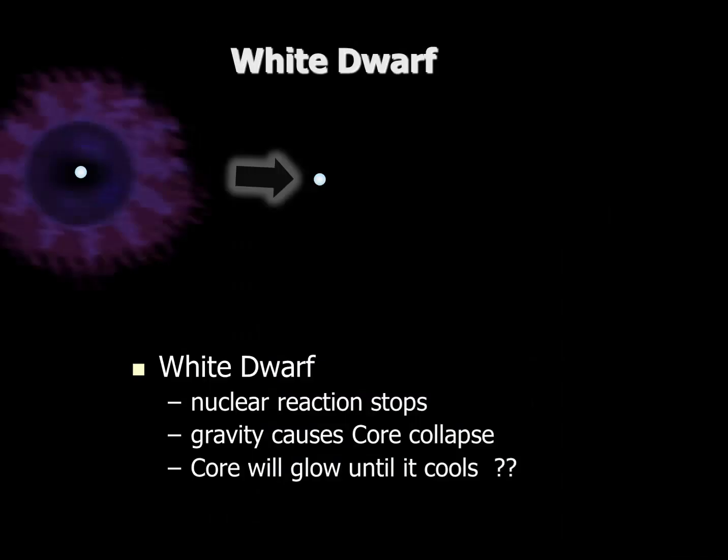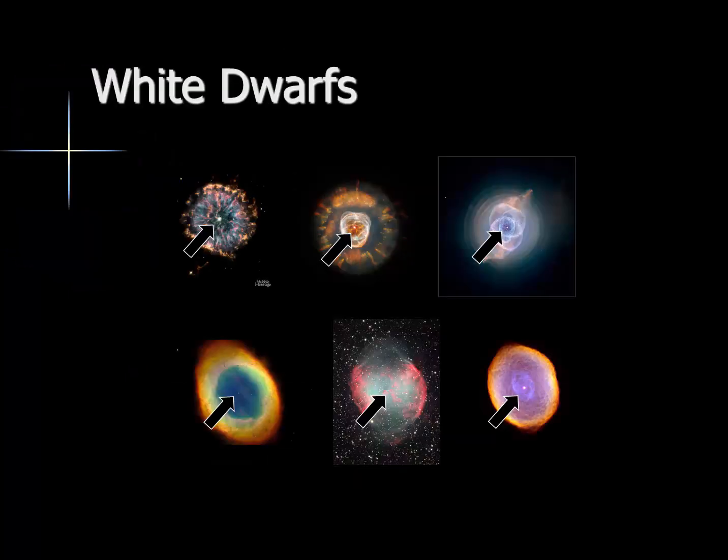For a white dwarf, the nuclear reactions have now stopped — it is no longer generating energy from nuclear reactions. Because of this, gravity becomes the dominant force. It is no longer balancing out the outward pressure of the nuclear reactions, so the core itself will collapse, and it may glow until it cools. I have a question mark here because we are not quite sure if this has happened yet. It is estimated that the core of a white dwarf may glow for between 15 and 20 billion years. Keep in mind that inside any planetary nebula, we can see the remnant white dwarf, as indicated by the arrows in these images.